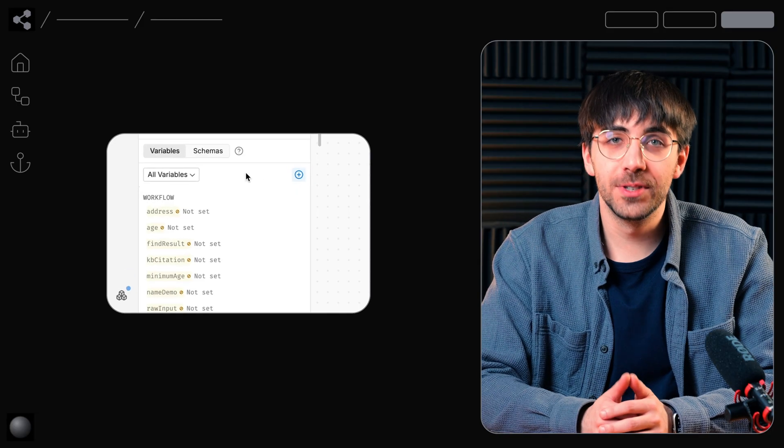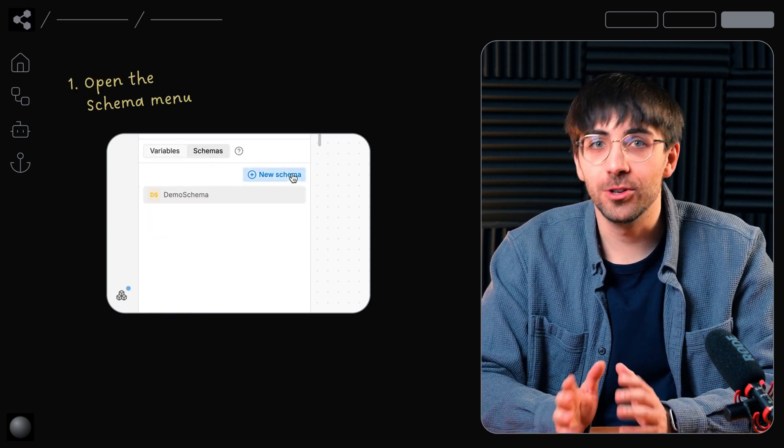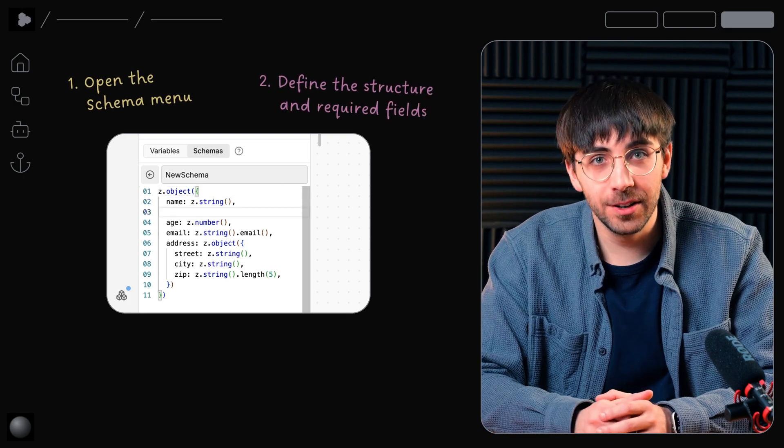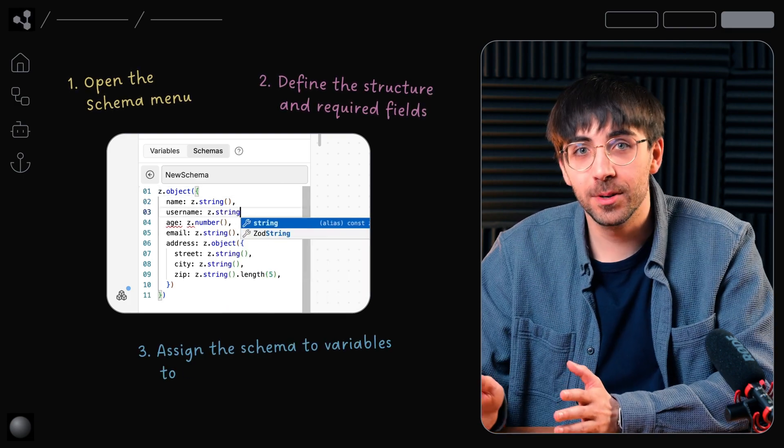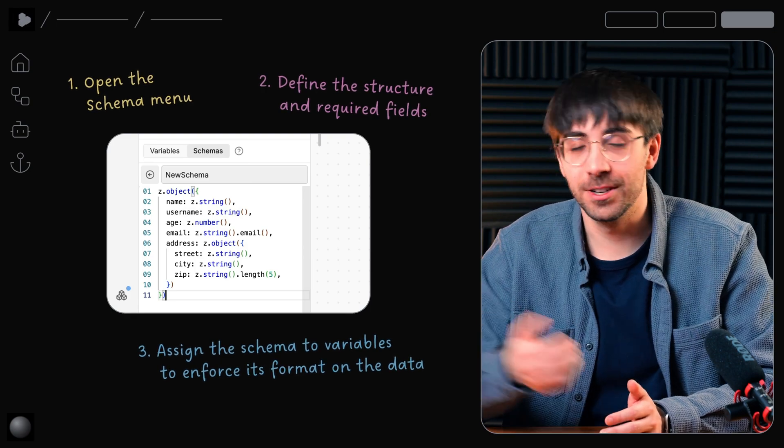To create a new schema to store or validate information, open the schema menu in the variables panel where you'll define the structure and required fields, assign the schema to variables, and enforce its format on the data that's contained in a certain variable.